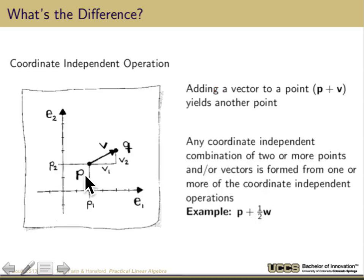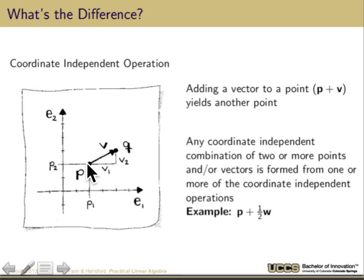We can also talk about adding a point to a vector. This is important because a point plus a vector is a point, not a vector. Any combination of two or more points and/or vectors can form coordinate-independent operations. So P plus V gives me point Q. P plus one-half W would be over here someplace — you can put all these together.